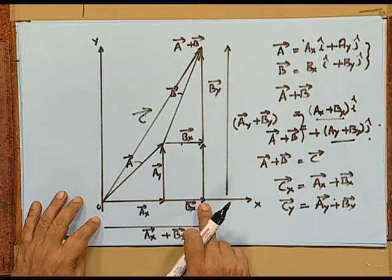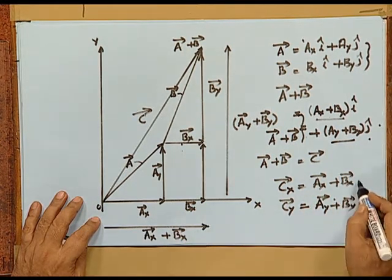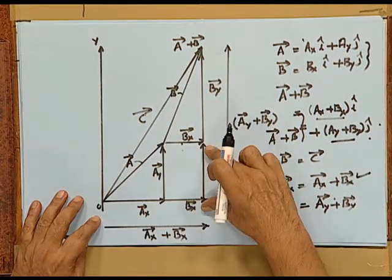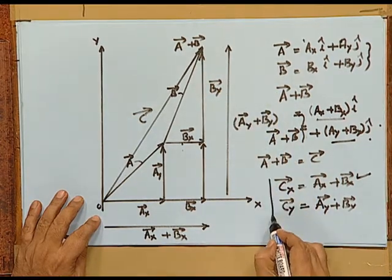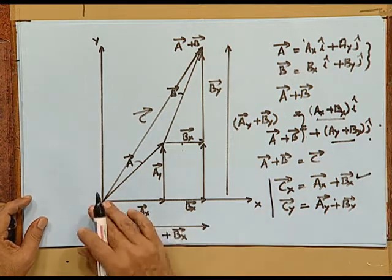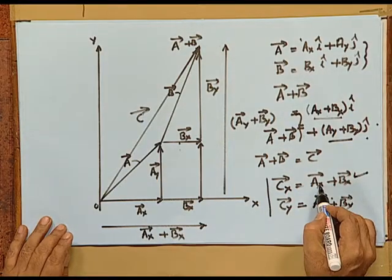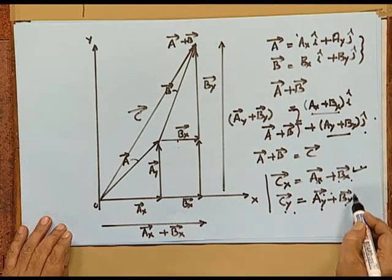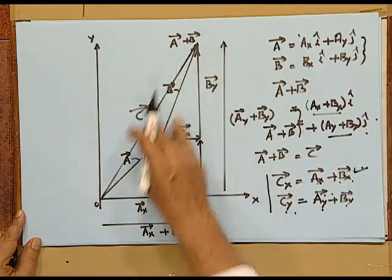Looking at the figure again: vector C has x-component which is the sum of Ax and Bx. The component of vector C in the y direction is Ay plus By. So the vector sum of A and B gives: Cx vector equals Ax vector plus Bx vector, and Cy vector equals Ay vector plus By vector. The component method helps you solve this problem easily instead of the graphical method, which is a more tedious geometrical construction.